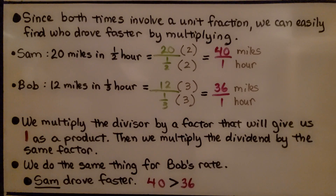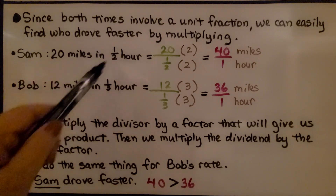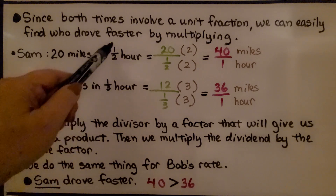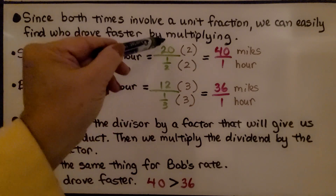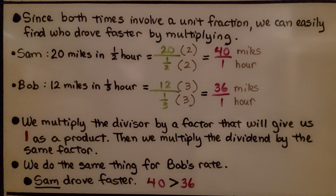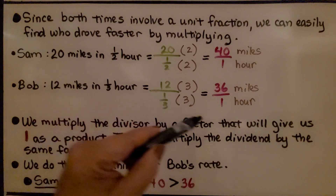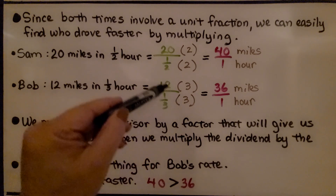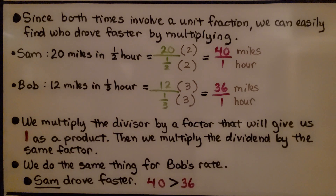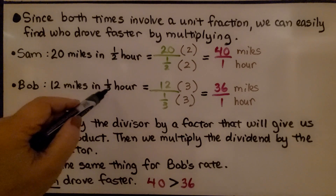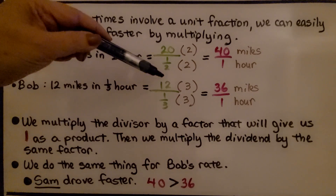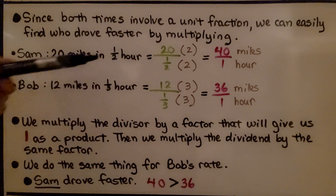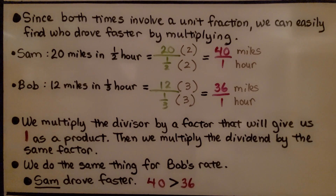Since both times involve a unit fraction, we can easily find who drove faster by multiplying. Sam is 20 miles in 1/2 hour and Bob is 12 miles in 1/3 hour — unit fractions have 1 for a numerator. We think: what does 1/2 need to be 1 whole? Multiply by 2. We multiply the numerator by the same number to get 40/1, or 40 miles per hour. For Bob, 1/3 needs to be multiplied by 3 to get 1 whole, so 12 times 3 is 36 miles per hour. We multiply the divisor by a factor that gives us 1 as a product, then multiply the dividend by the same factor. Since 40 is greater than 36, Sam drove faster.